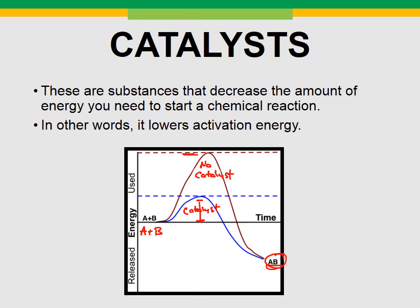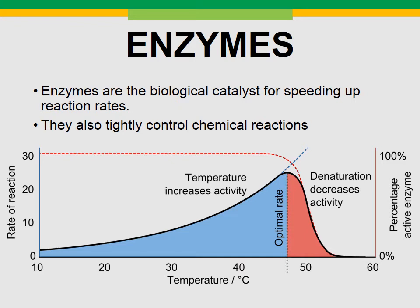In biology, we know catalysts by a different name: enzymes. Enzymes are biological catalysts used for speeding up reaction rates — making the transformation of molecules happen much more quickly and efficiently. They also tightly control those chemical reactions so they don't just go crazy and cause an explosion inside your stomach. There are only so many enzymes floating around inside you at any given time, so your body can handle only so much of that reaction at a time.